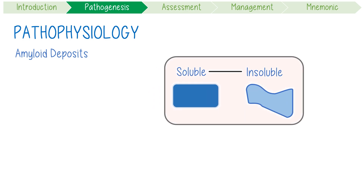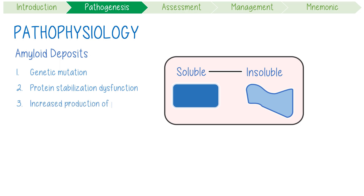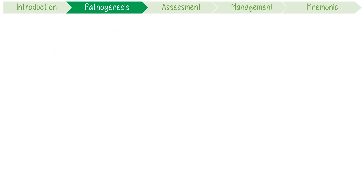All of this might happen for a couple of reasons: 1. A genetic mutation resulting in structural changes. 2. Issues with protein stabilization mechanisms like dysfunctional molecular chaperones. 3. Increased production of amyloid precursor proteins from chronic inflammation. 4. Decreased clearance of precursor proteins.